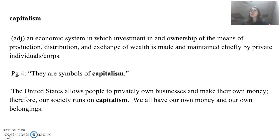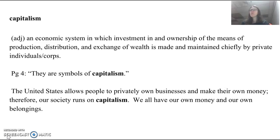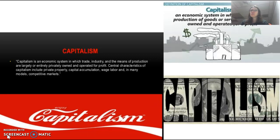Our next word is capitalism. This is an economic system in which investment in and ownership of the means of production, distribution, and exchange of wealth is made and maintained chiefly by private individuals or corporations — an economic system run by private ownership. This word comes from page 4: 'They are symbols of capitalism.' My example sentence: the United States allows people to privately own businesses and make their own money; therefore, our economy runs on capitalism. We all have our own money and belongings — the United States is a capitalistic country.